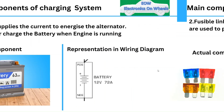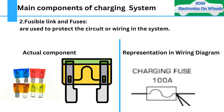The second component is fusible links and fuses. Fuses and fusible links are used to protect the circuit and wiring from overcurrents. The actual component has a filament inside — when the fuse blows, this filament breaks. In the wiring diagram, this is represented as a mega fuse symbol showing the fuse element.